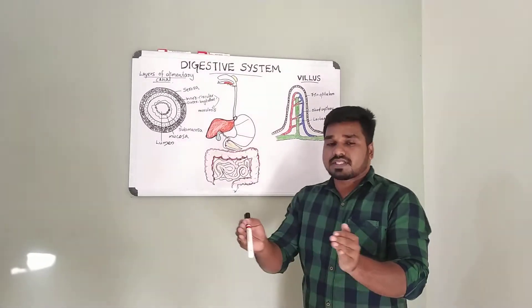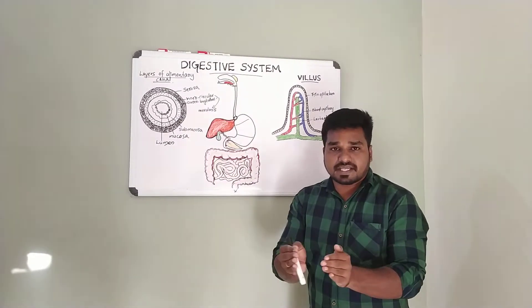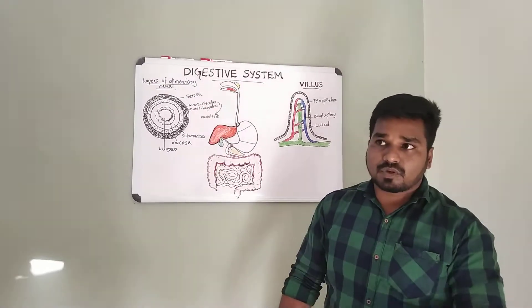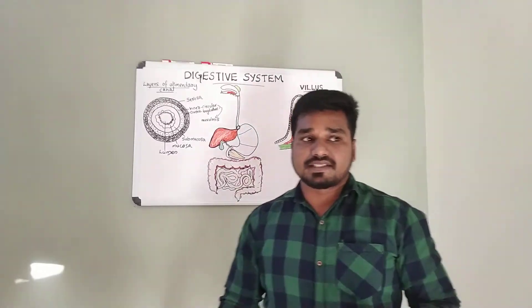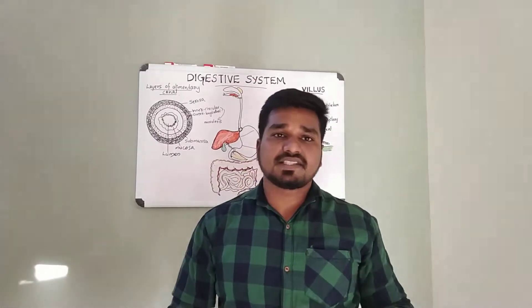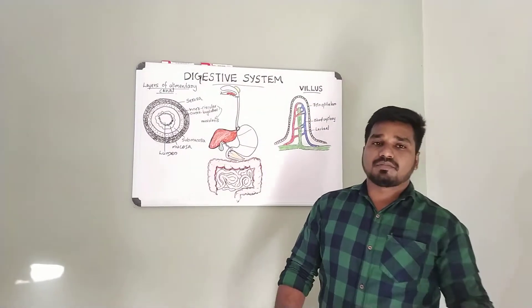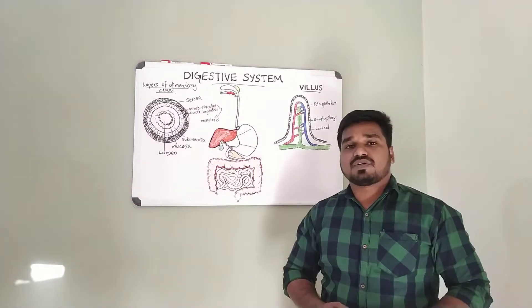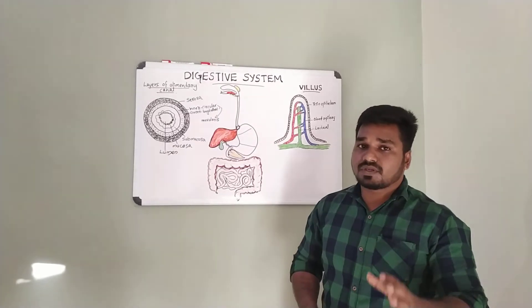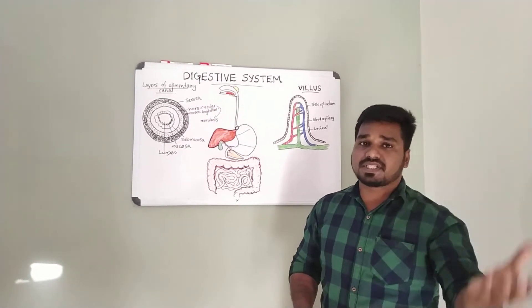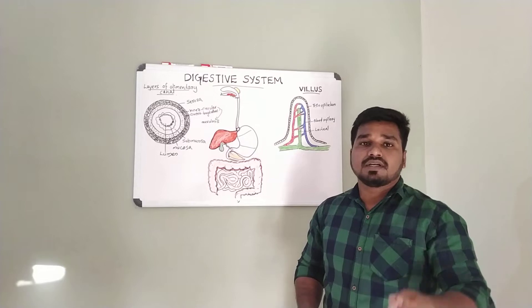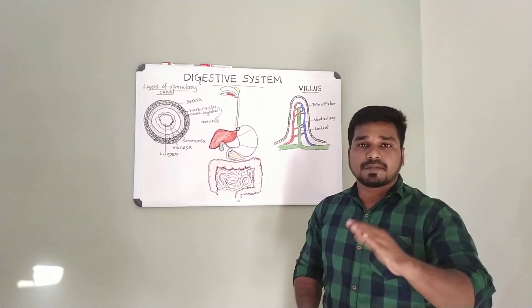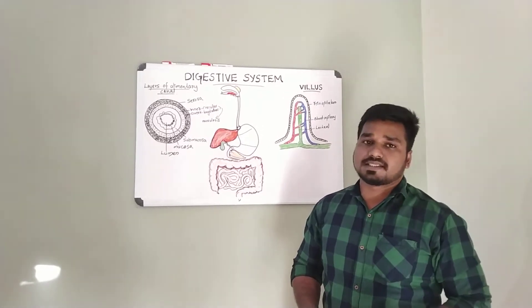Gastric juice also contains pepsinogen, which is an inactive enzyme precursor. In the presence of hydrochloric acid, pepsinogen is activated into pepsin, which carries out protein digestion in the stomach.